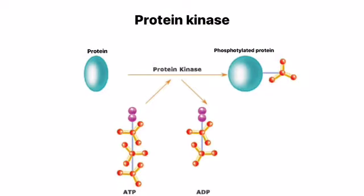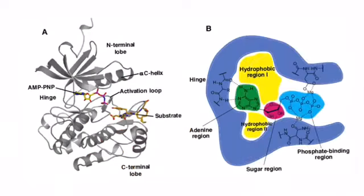Glycogen synthase is directly regulated by protein kinases such as glycogen synthase kinase 3, protein kinase A, and casein kinase 2, and also by protein phosphatase 1, which activates glycogen synthase via dephosphorylation.